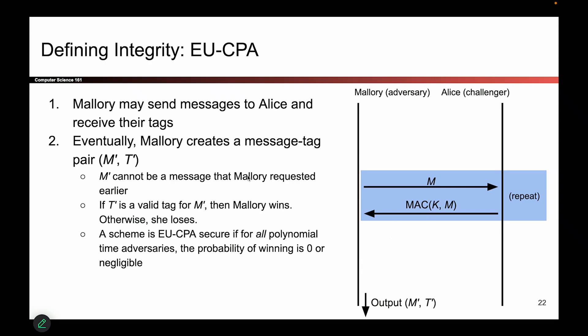One important caveat: Mallory can't use one of the original messages — that's cheating. If she has already seen a message and the MAC on that message, she cannot pick that message again in the challenge phase. The scheme is deterministic, so doing that would allow Mallory to win every single time, and that's not a very useful game. So Mallory has to choose a new message she hasn't seen before.